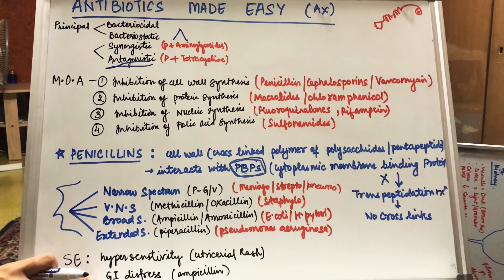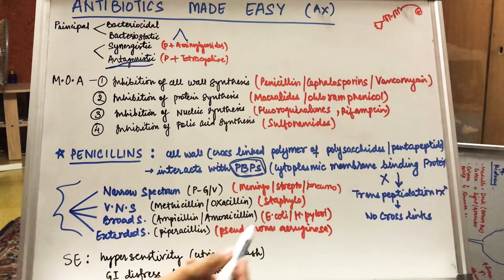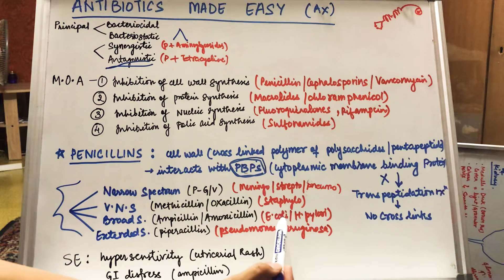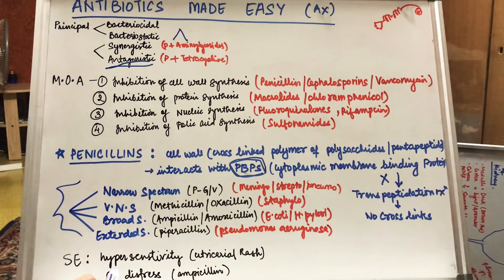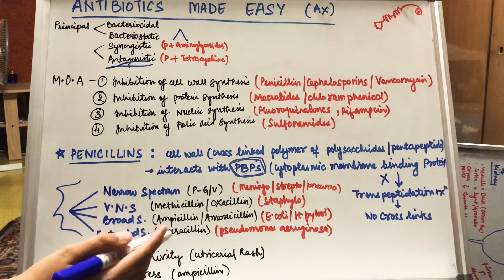Another side effect is gastrointestinal distress. We are giving amoxicillin or ampicillin for E. coli and H. pylori. This can also cause GI distress. If we are giving it in excess amount, it will cause gastrointestinal distress as a side effect.